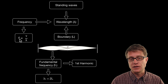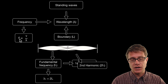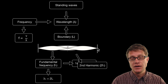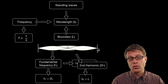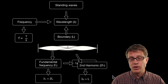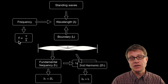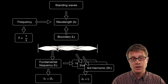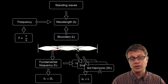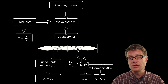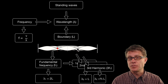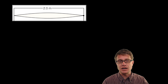What would the second harmonic look like? We can fit an entire wave — up to the crest, down to the trough, and back again. In this case the wavelength equals the boundary length L, because we can put one whole wavelength inside there. Then we can figure out the third harmonic: the wavelength equals two-thirds the length. Once we know the boundary we can figure out the wavelength, and once we know the wavelength and the speed we can figure out the frequency.